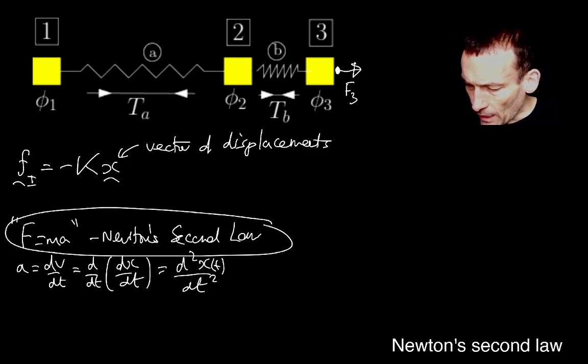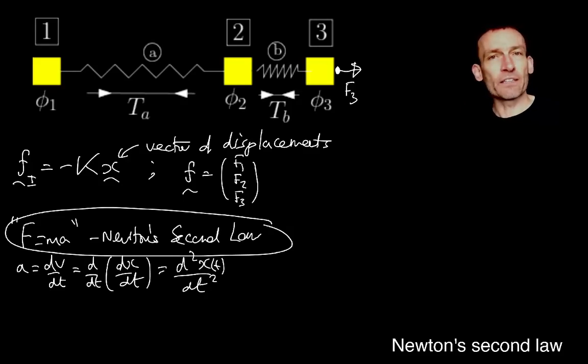And you remember, I encoded those in the last lecture as this vector F. So that would be F1, F2, F3, where I've just drawn F3 there, but there could be other forces on masses one and two. So those are the external forces.